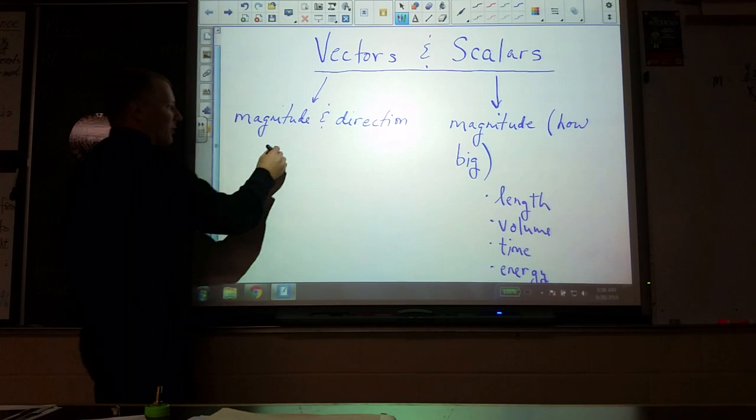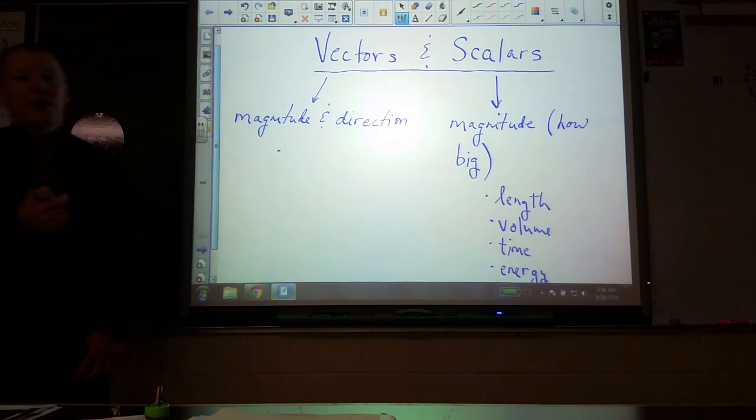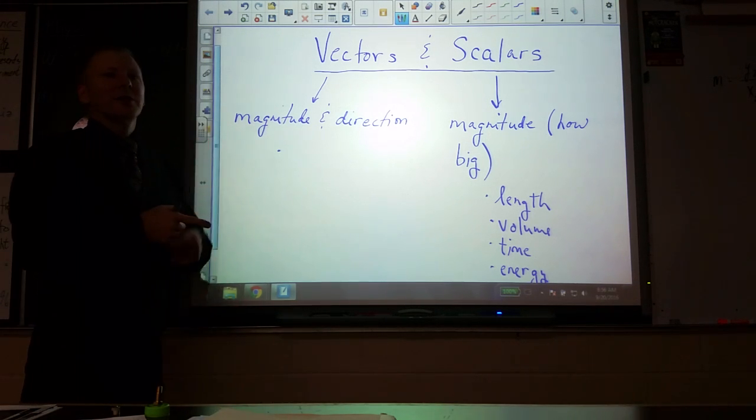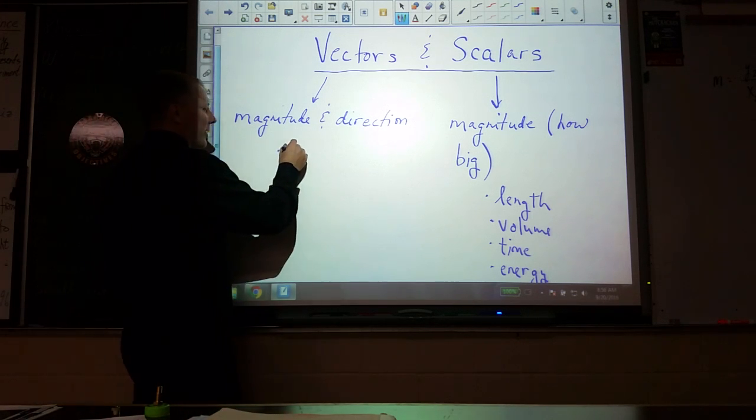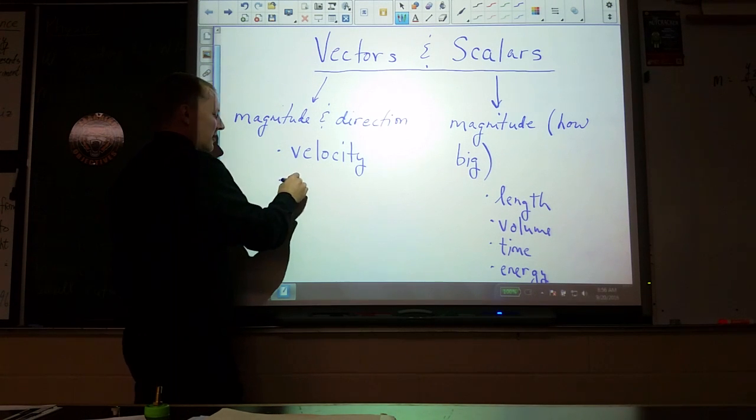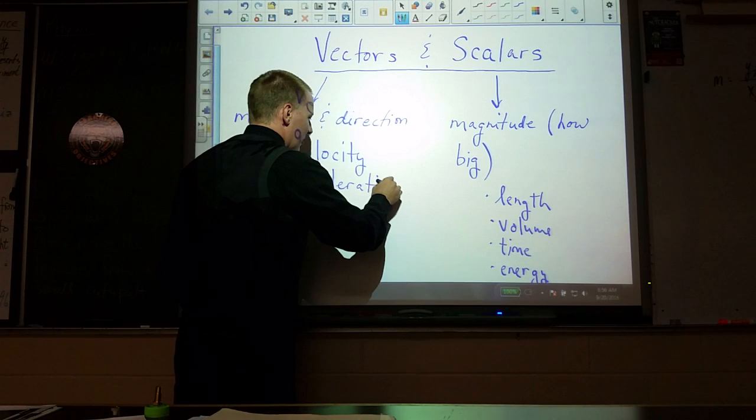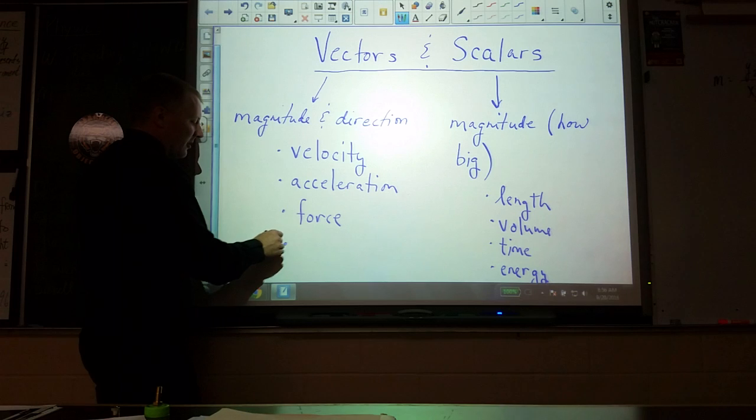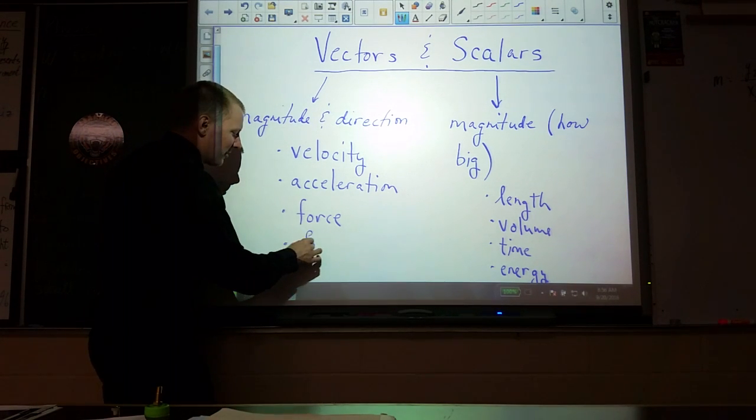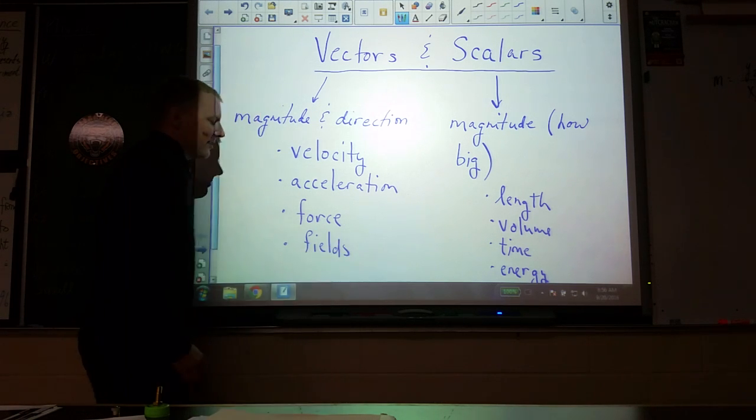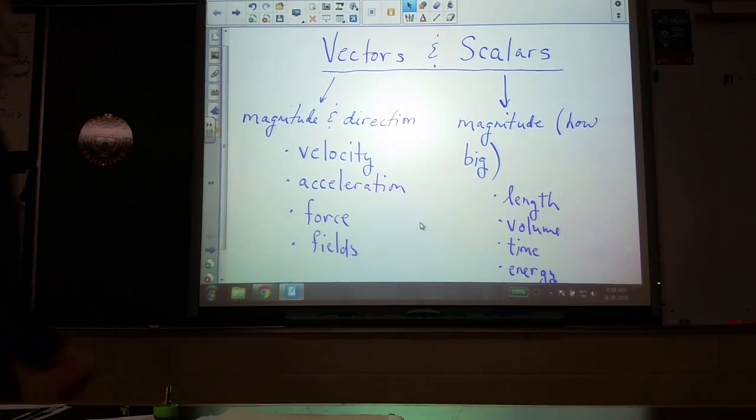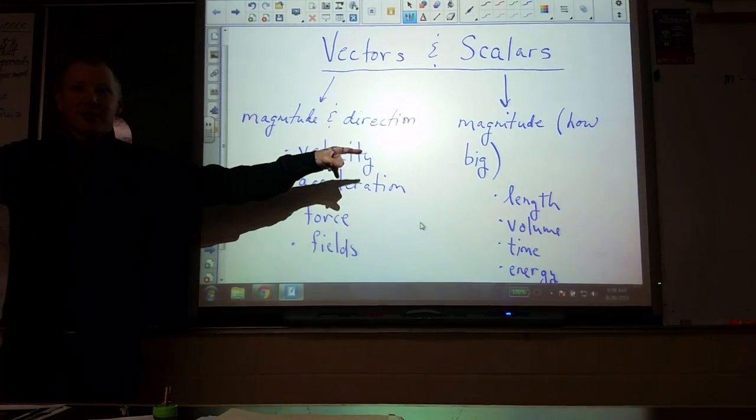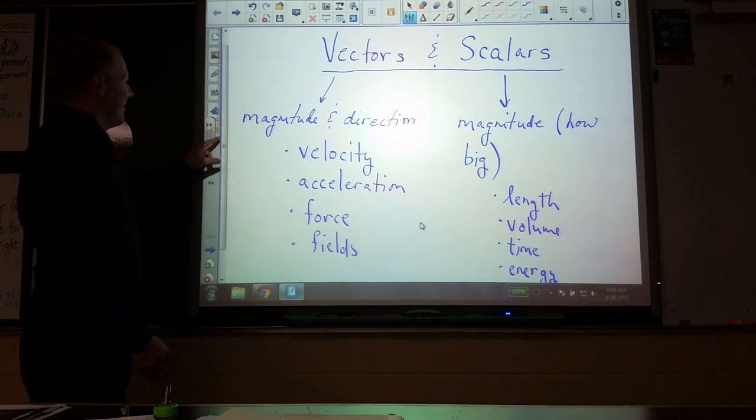Vectors also have a magnitude because we care how big they are, but they include direction as well. How big and in what direction. We have things like velocity, acceleration, force, and various types of fields like gravitational or electromagnetic fields. All of these, it's important what direction they are acting, so they are vectors.